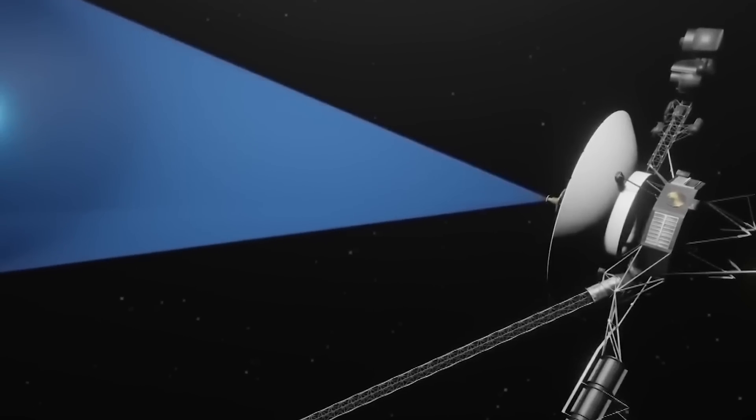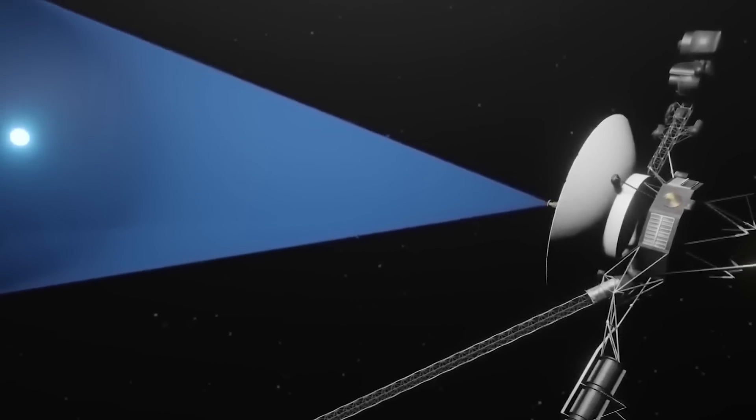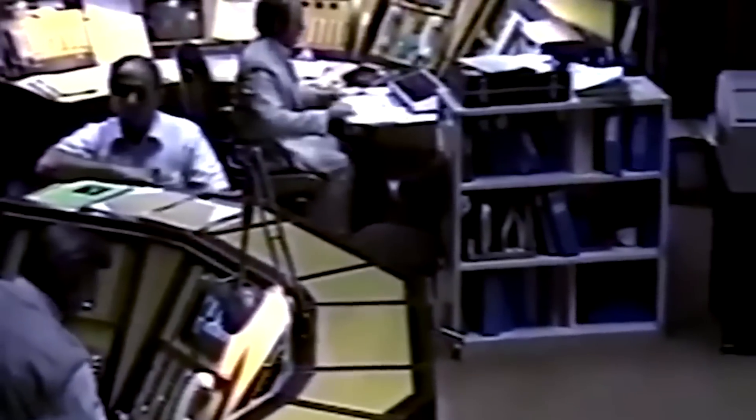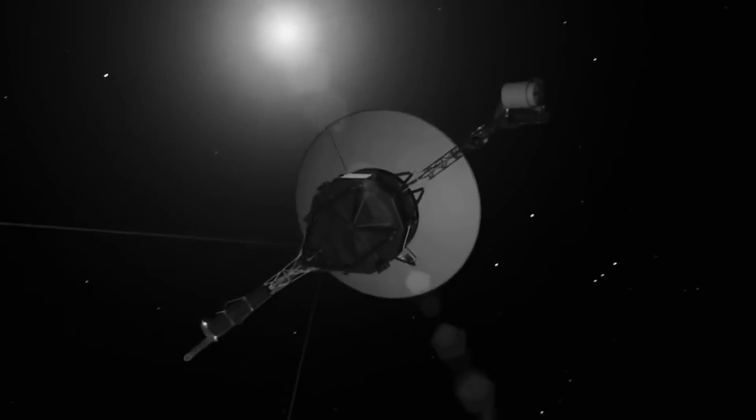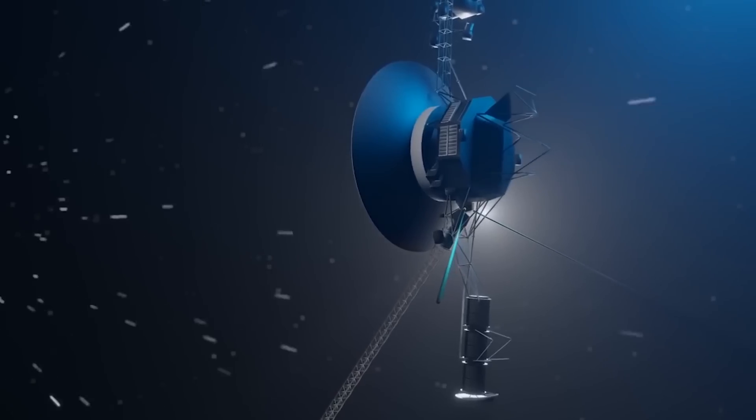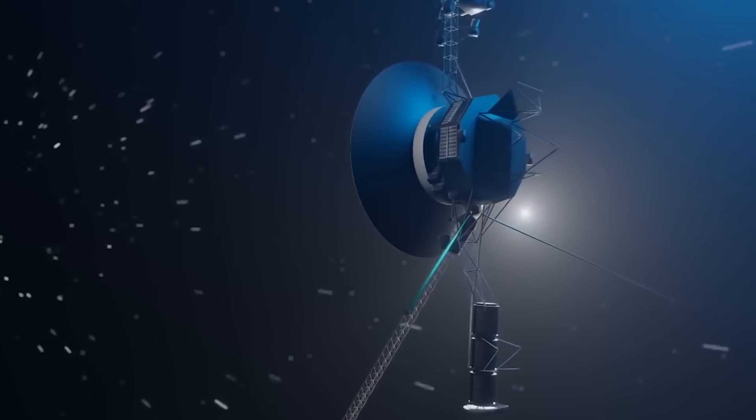However, these interstellar pioneers had plenty of surprises in store. At the start of the epic journeys, they gave us incredible close-up images of the moons of Jupiter and Saturn, revealing worlds far more active and dynamic than anticipated.